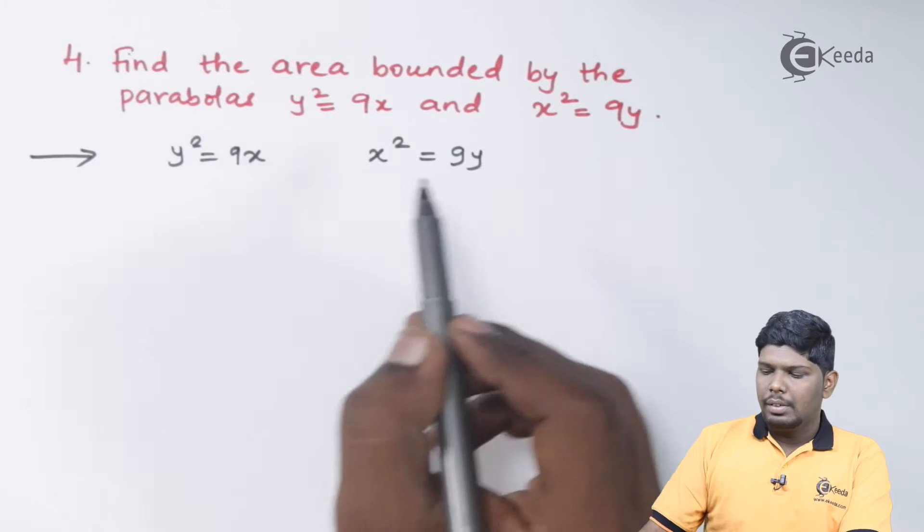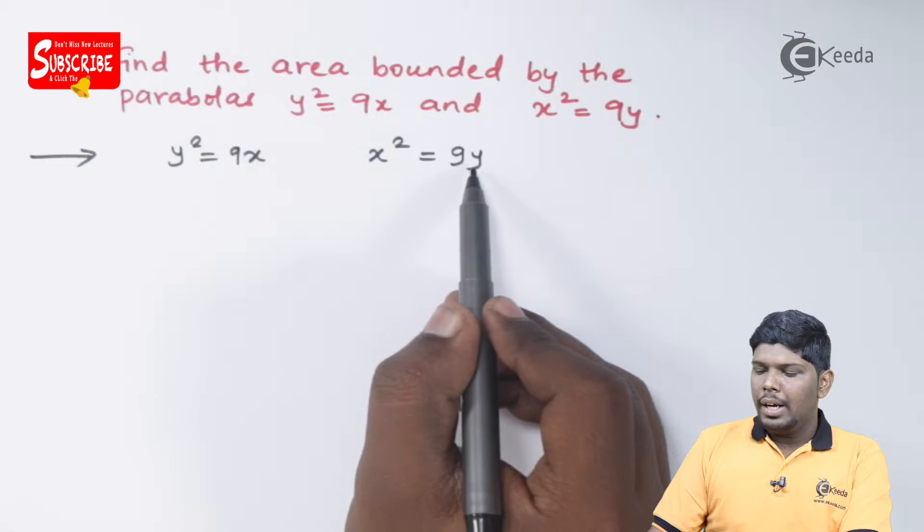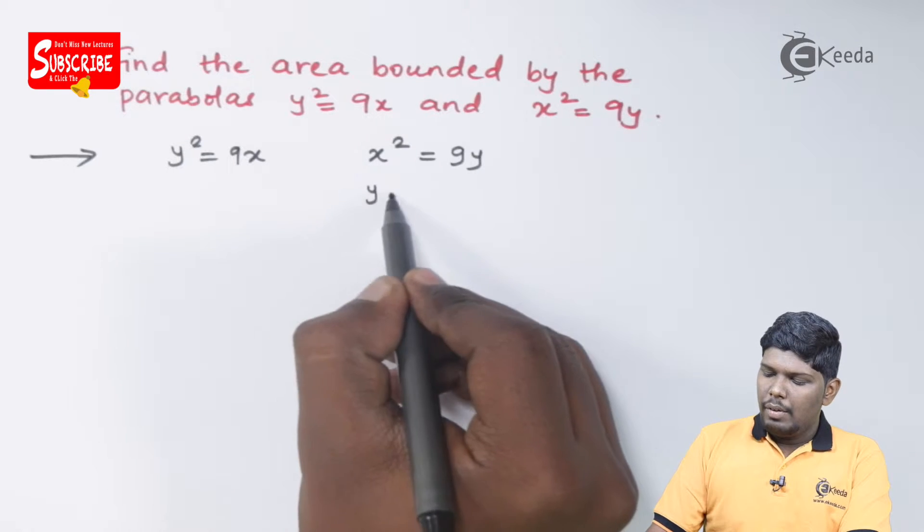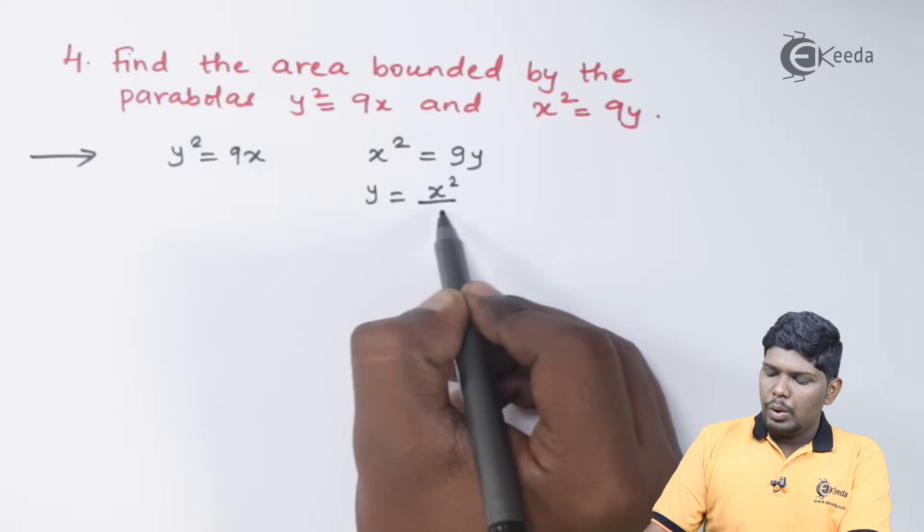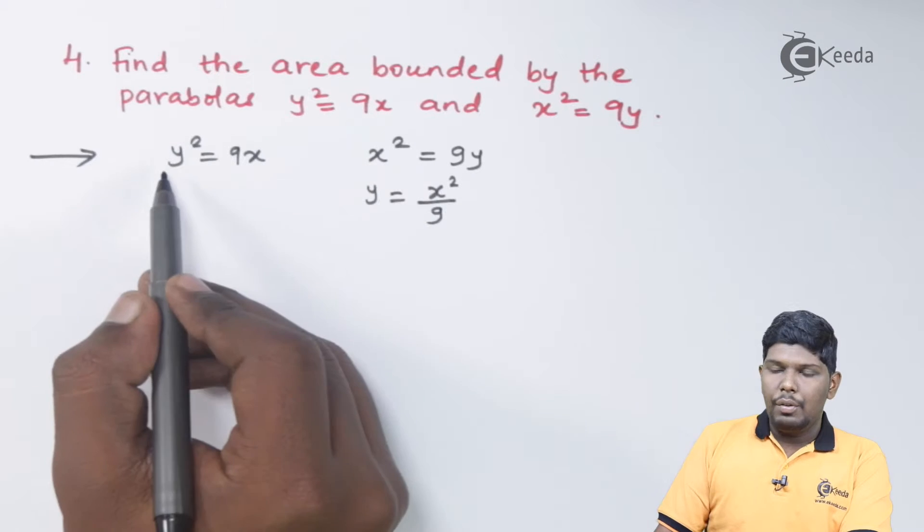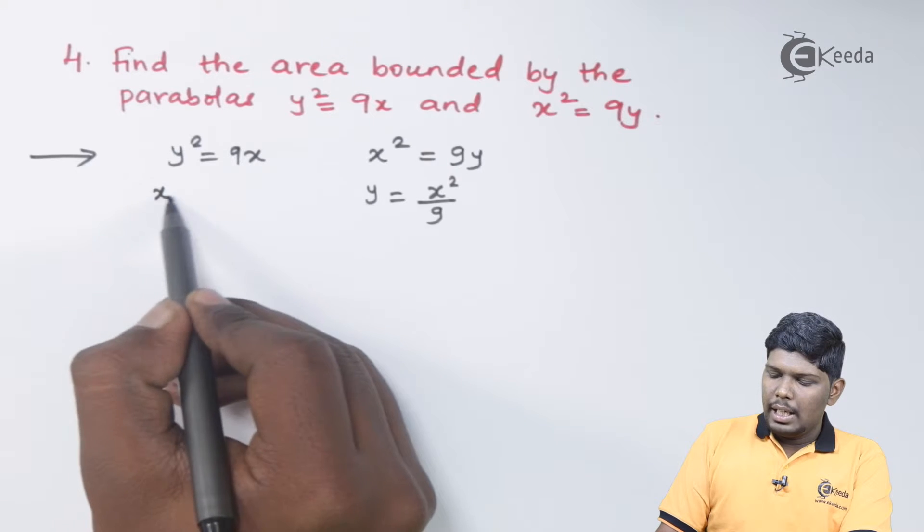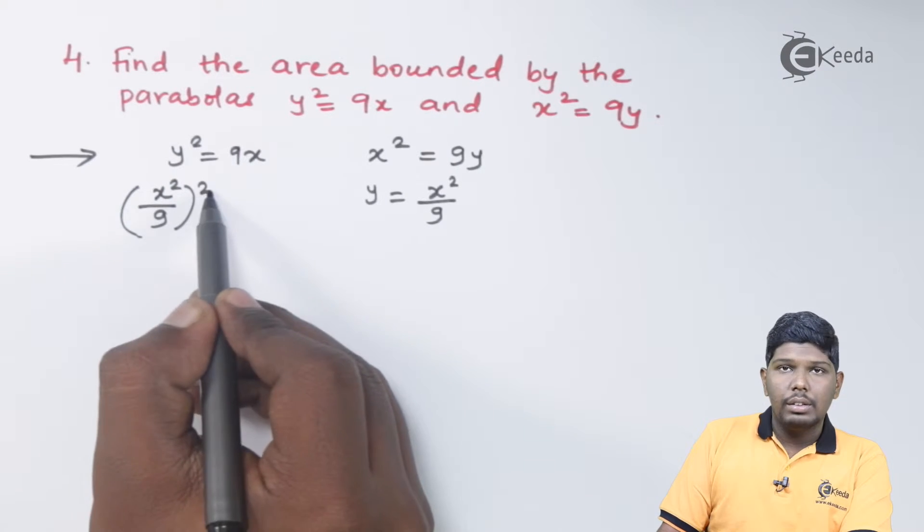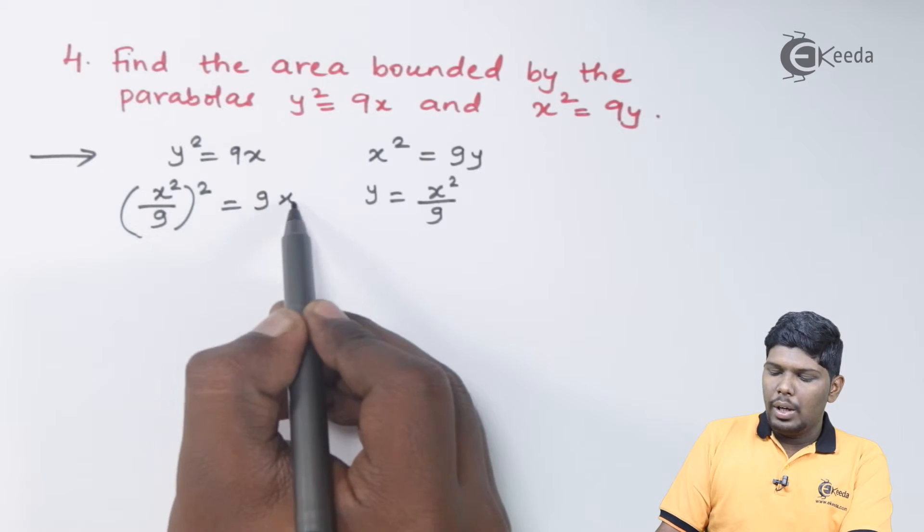Out of any one parabola, say the second parabola, we can find the value of y first. The value of y will be x² upon 9, and substitute the value of y in the first equation. So we have y as x² upon 9, again we have whole square, that will give you 9x.